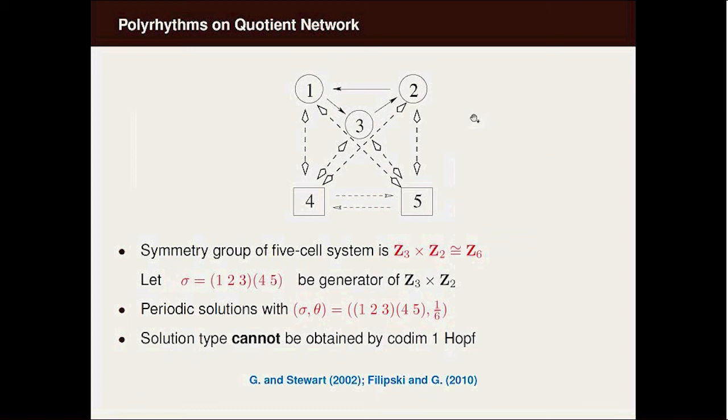Another example is two rings, a unidirectional three node ring and a bidirectional two node ring, all coupled together. This system has Z3 cross Z2 symmetry. With their relatively prime, this is Z6 symmetry.